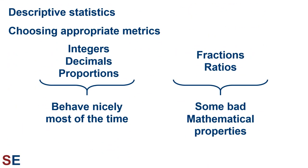Another aspect of choosing metrics is what kind of numbers and values to work with. Some types of values can lead to equations that are easy to understand and work with, but others can give you weird results. For example, working with integers — that is whole numbers — decimal numbers, and proportions usually works well. On the other hand, fractions and ratios, while often being nice for descriptions, can end up having some terrible mathematical properties when we try to do more complicated things. If we just want to describe things these are all fine, but if we want to do more — the inferential statistics I'm about to talk about — certain metrics work better than others.